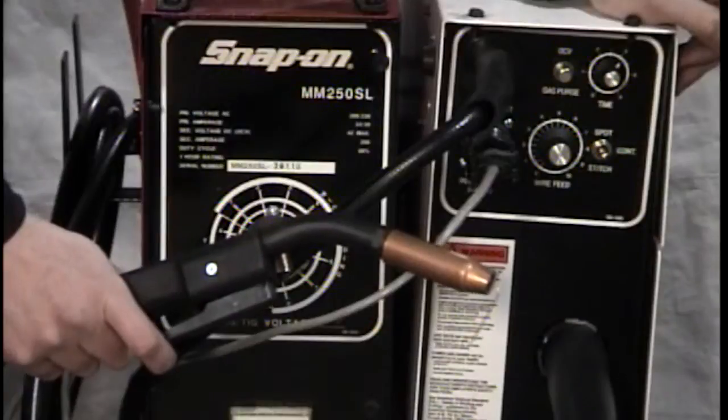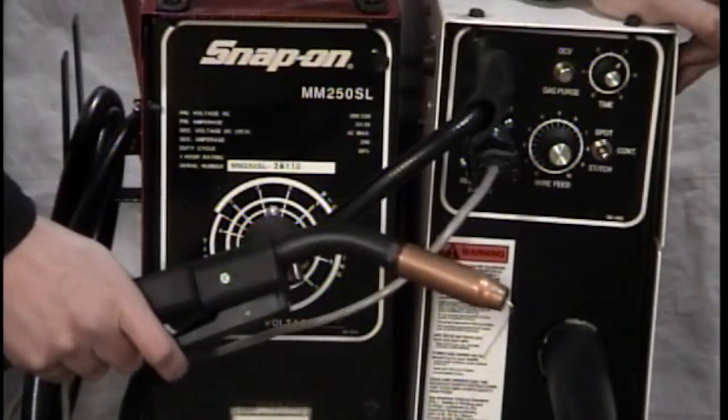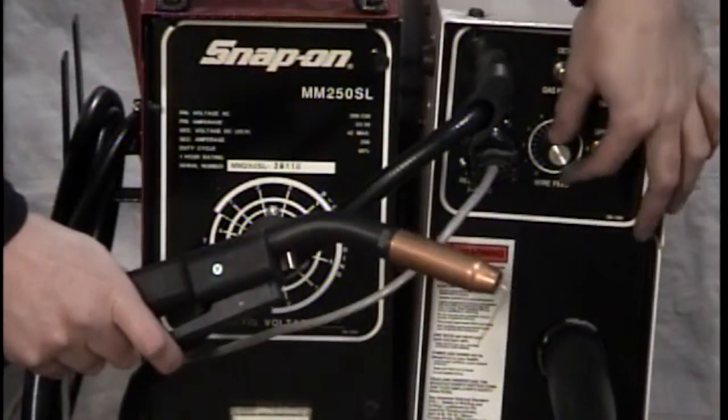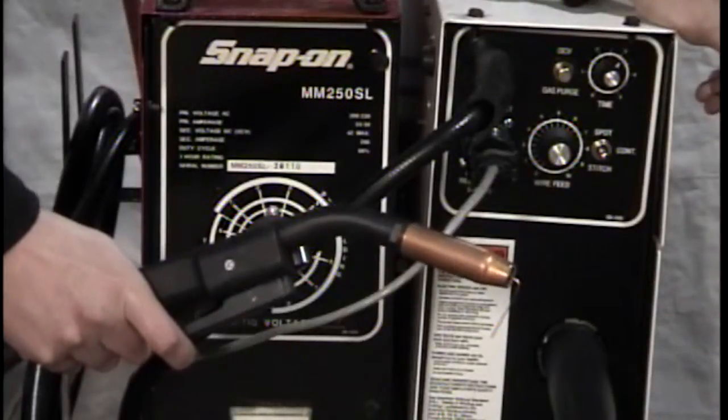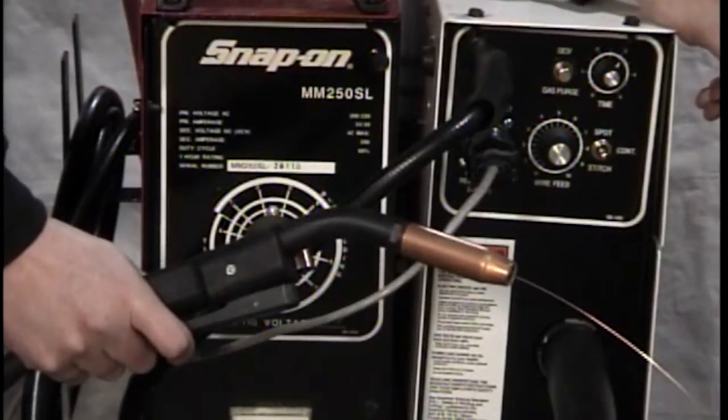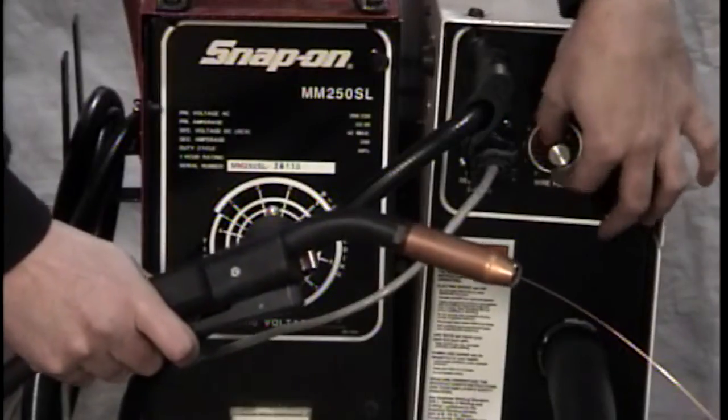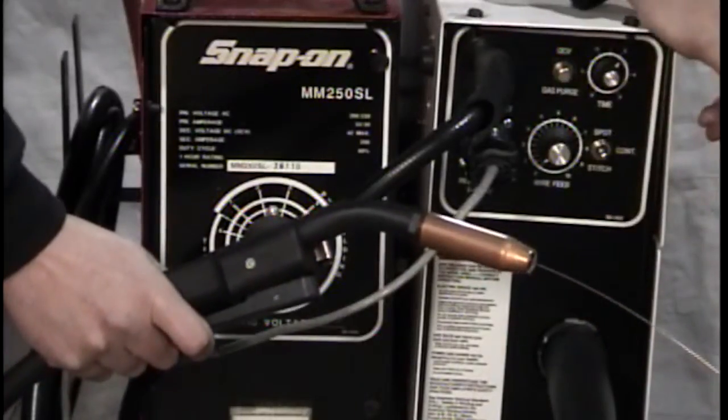Let me show you what can happen if you don't have your wire speed calibrated. I'm all the way on ten, wire speed ten, going as fast as it should go. I pull the trigger, it's coming out fast. As I slow down to zero, there's no change, it's still fast.